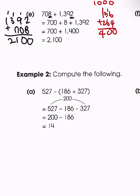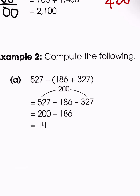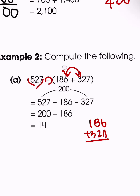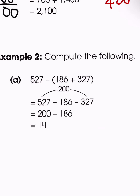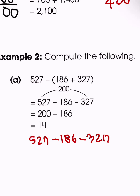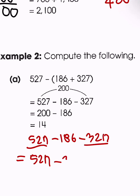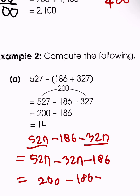We have a second example that uses parentheses. We can solve the parentheses first — 186 plus 327 — and then subtract from 527. But instead, we can distribute the negative sign: 527 minus 186 minus 327. Since 527 and 327 both end in 7, we rearrange: 527 minus 327 gives 200, and 200 minus 186 gives 14.